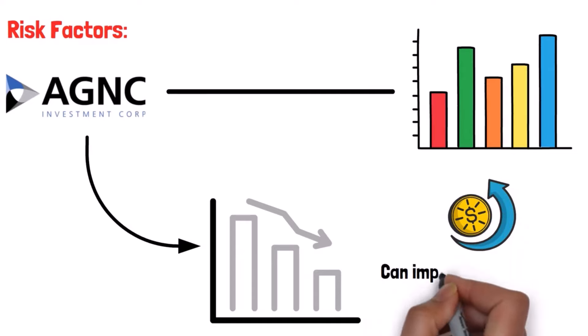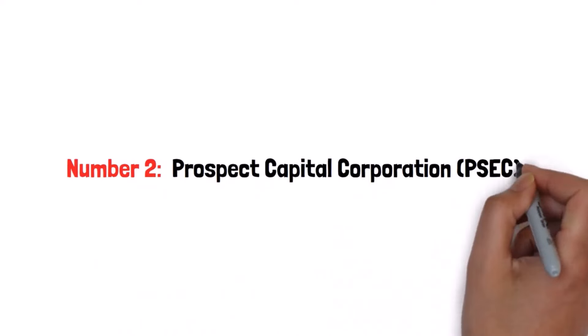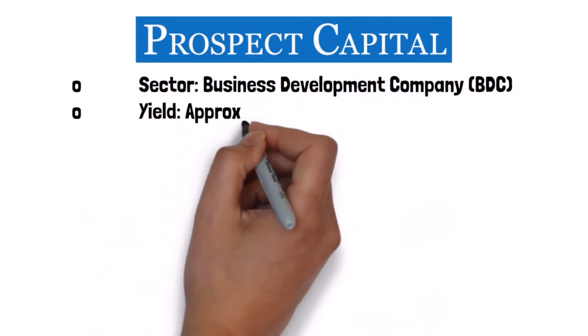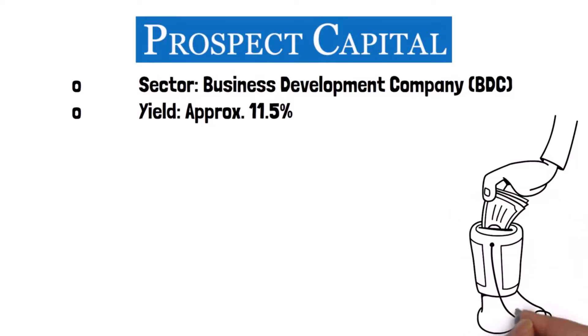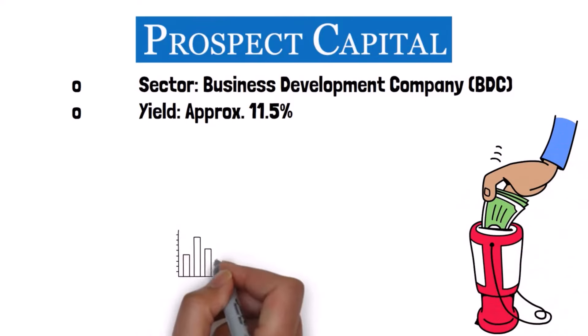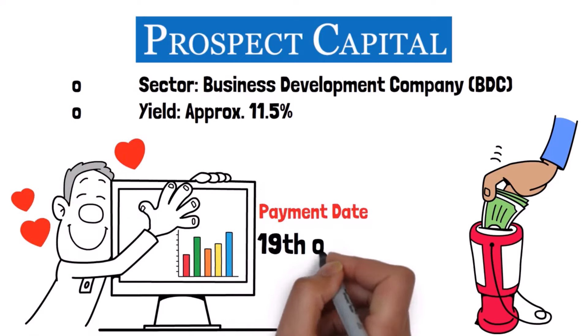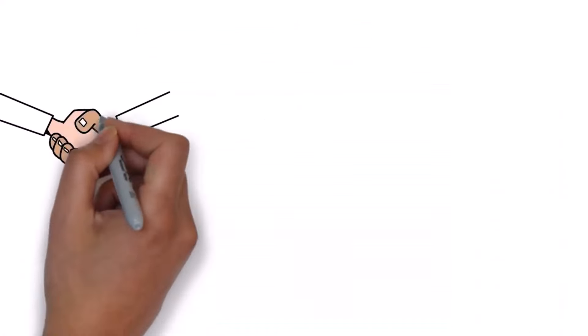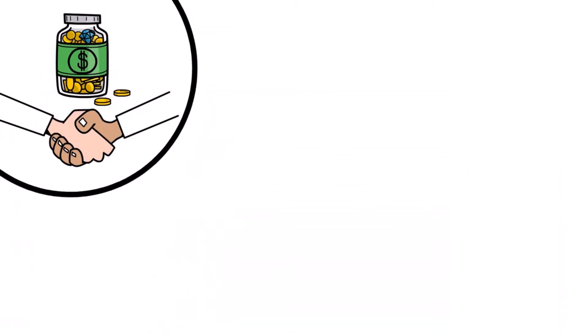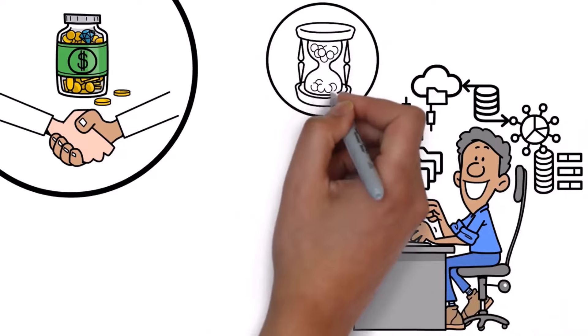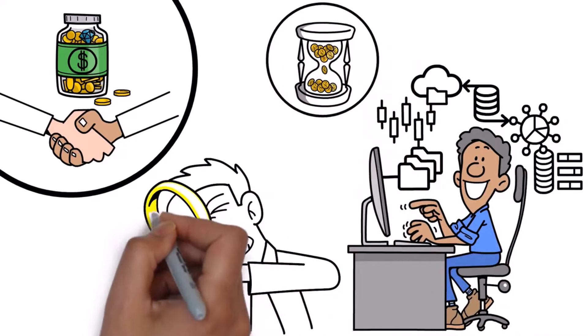Number two: Prospect Capital Corporation (PSEC). Sector: Business Development Company (BDC). Yield: approximately 11.5%. PSEC invests in private middle-market businesses. Its monthly dividends make it a favorite among income investors. Payment date: 19th of each month. Prospect Capital is like your financial partner in crime, investing in a diversified portfolio of middle-market companies. Its high yield and steady payments are attractive, but remember to watch out for economic fluctuations affecting its portfolio companies.